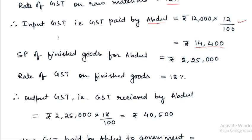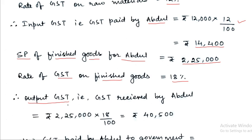The selling price of finished goods for Abdul is Rs. 2,25,000. The rate of GST on finished goods is 18%. Output GST is the GST received by selling an article. So Abdul will receive output GST of Rs. 2,25,000 × 18 / 100, which equals Rs. 40,500.